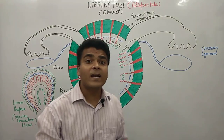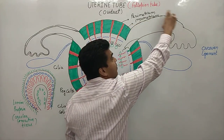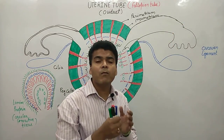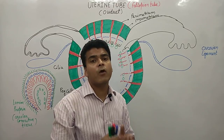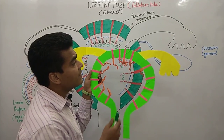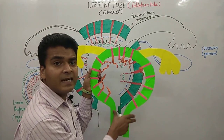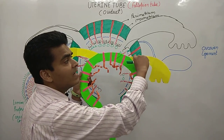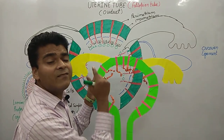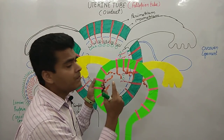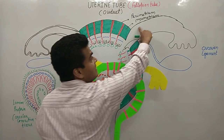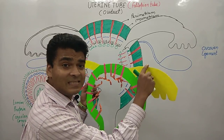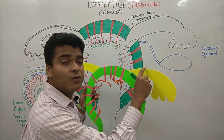First, let us understand what the fallopian tube is. This whole portion is known as the fallopian tube. I have made a model for you. Here you can see the diagram of the uterus, and the yellow color arms in this diagram are known as the fallopian tube.